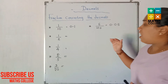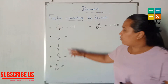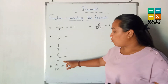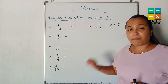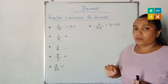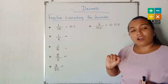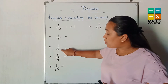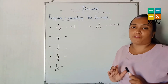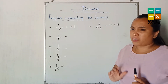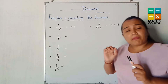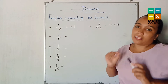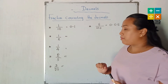Today we are ready to learn how to write fractions as decimals where the denominators are not a power of 10. Observe these given fractions — what are the denominators? They are 2, 4, 5, and 20. These are not powers of 10. So how do we write these fractions? We convert the denominator to a power of 10 by multiplying by any suitable number.